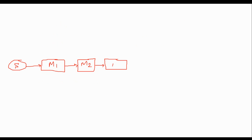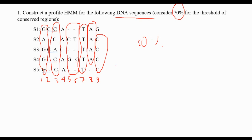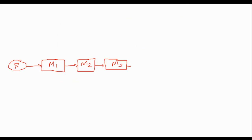For the fourth position, again I have four letters of the same type — this is a conserved region, so I have a third one, M3. Conserved regions make our job easier; whenever we don't have them it may indicate an insert or delete. For the fifth and sixth positions, we don't have conserved regions. Then for the next ones — positions seven through nine — I have 100%, 80%, and 80%, so I have three more conserved regions. In total, I have six conserved regions.